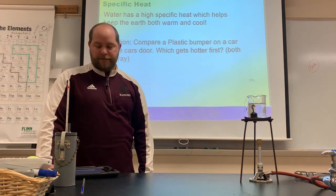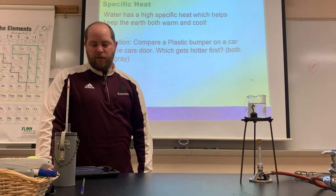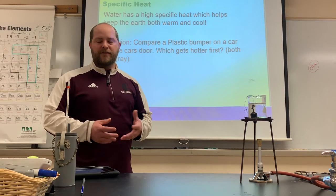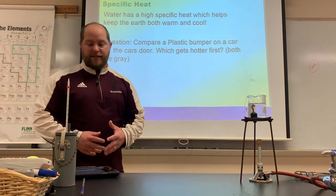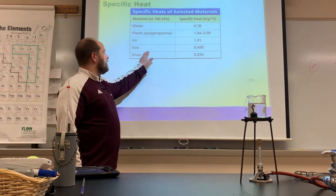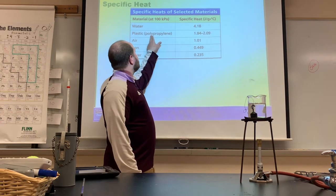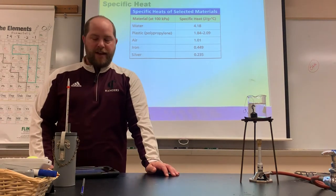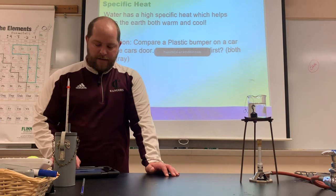Here's a question: compare a plastic bumper on a car versus the metal car doors — which gets hotter faster? Assuming both are the same color, the answer is the car door, which is metal. Looking at the specific heat chart, iron is 0.449 versus plastic at 2. It takes much more energy to warm up plastic than iron, so the metal door gets hotter faster.